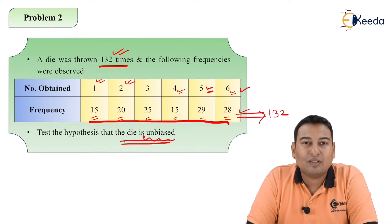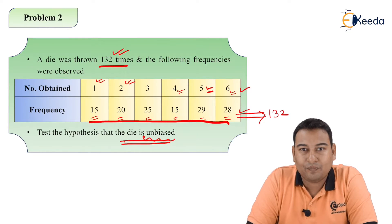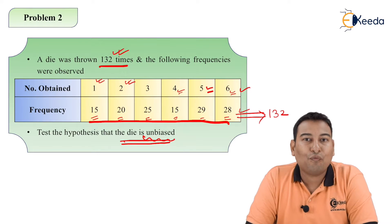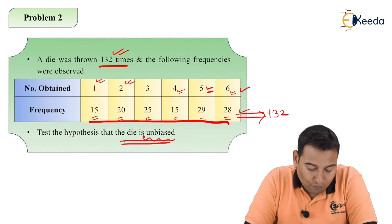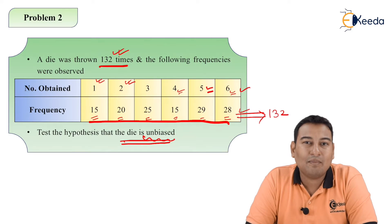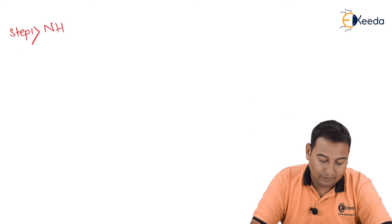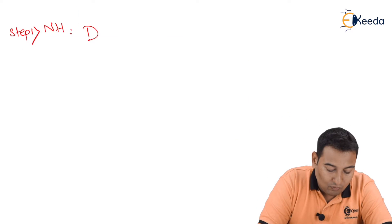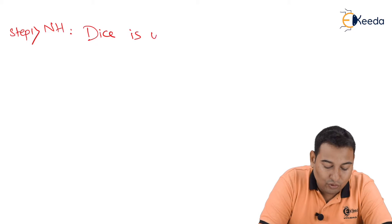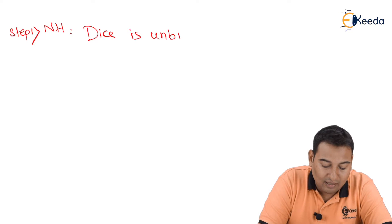Unbiased die means the die which is not biased, not biased means fair. So my aim is to check whether the die is unbiased, that means the die is fair. Null hypothesis: whatever is given we're going to assume it as it is. So die is unbiased.